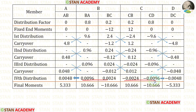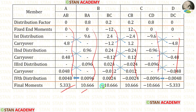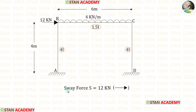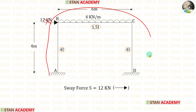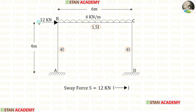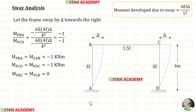Here I have done the fourth distribution. I am stopping at the fourth distribution because I am getting very small values. In the last distribution we should not give carry over to all the members — we have to give carry over only to the fixed ends. Now let us add all of the values and find the final moments. Now let us find the sway force S. If we remove the point load, this frame becomes a non-sway type frame because it has symmetrical dimensions and symmetrical loading. In this case we can directly take this 12 kN as the sway force S, acting towards the right side. We have finished the non-sway analysis.